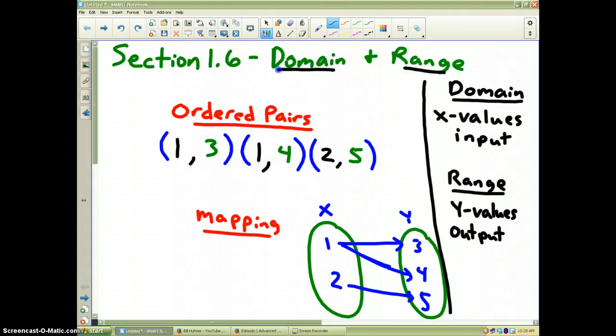Now, within section 1.6, they represent a set of data a number of different ways. First of all, a set of data can be represented as what is called ordered pairs, and hopefully you've seen all these before. For example, I have the problem, a set of ordered pairs, (1,3), (1,4), and (2,5).